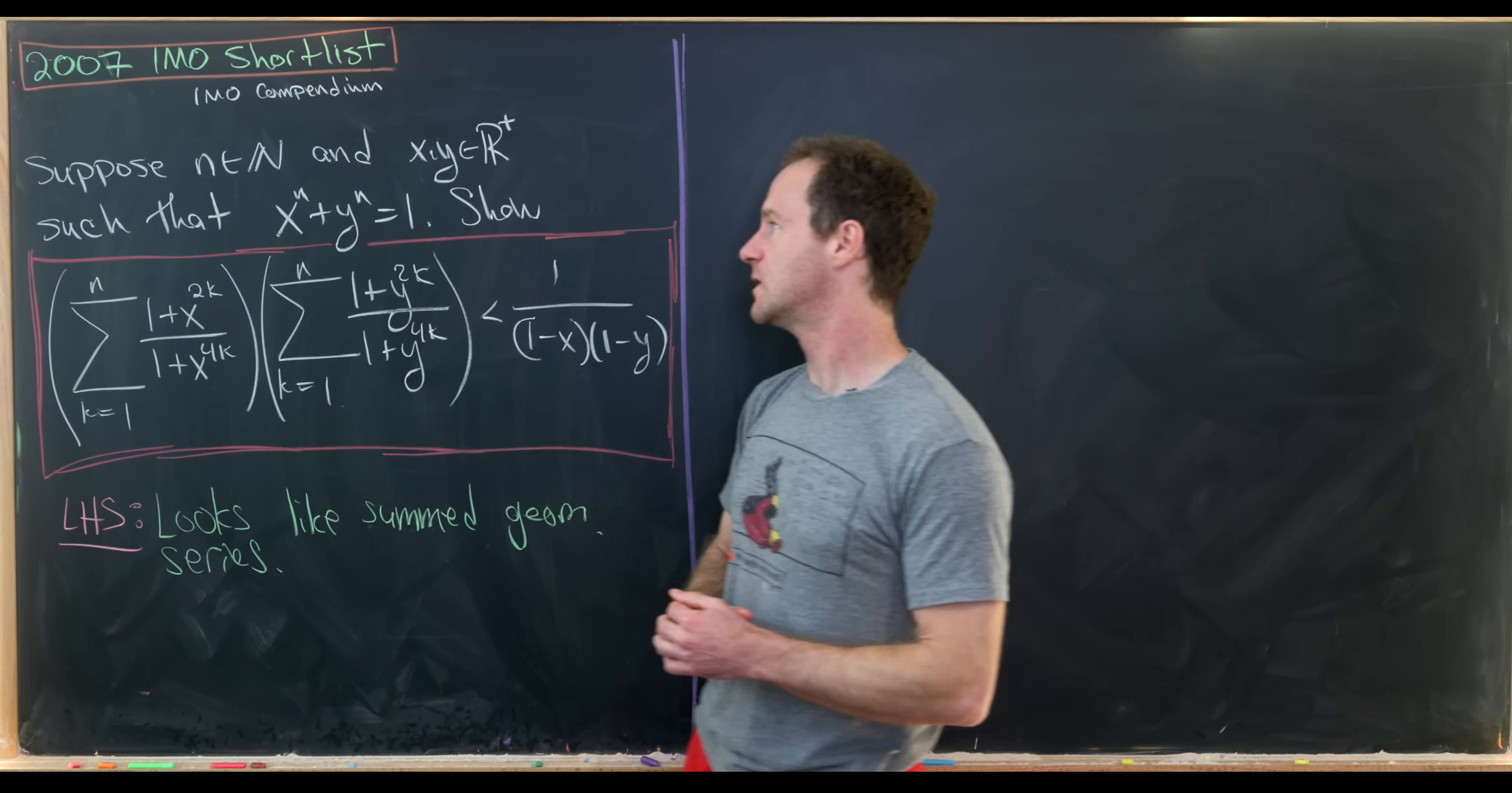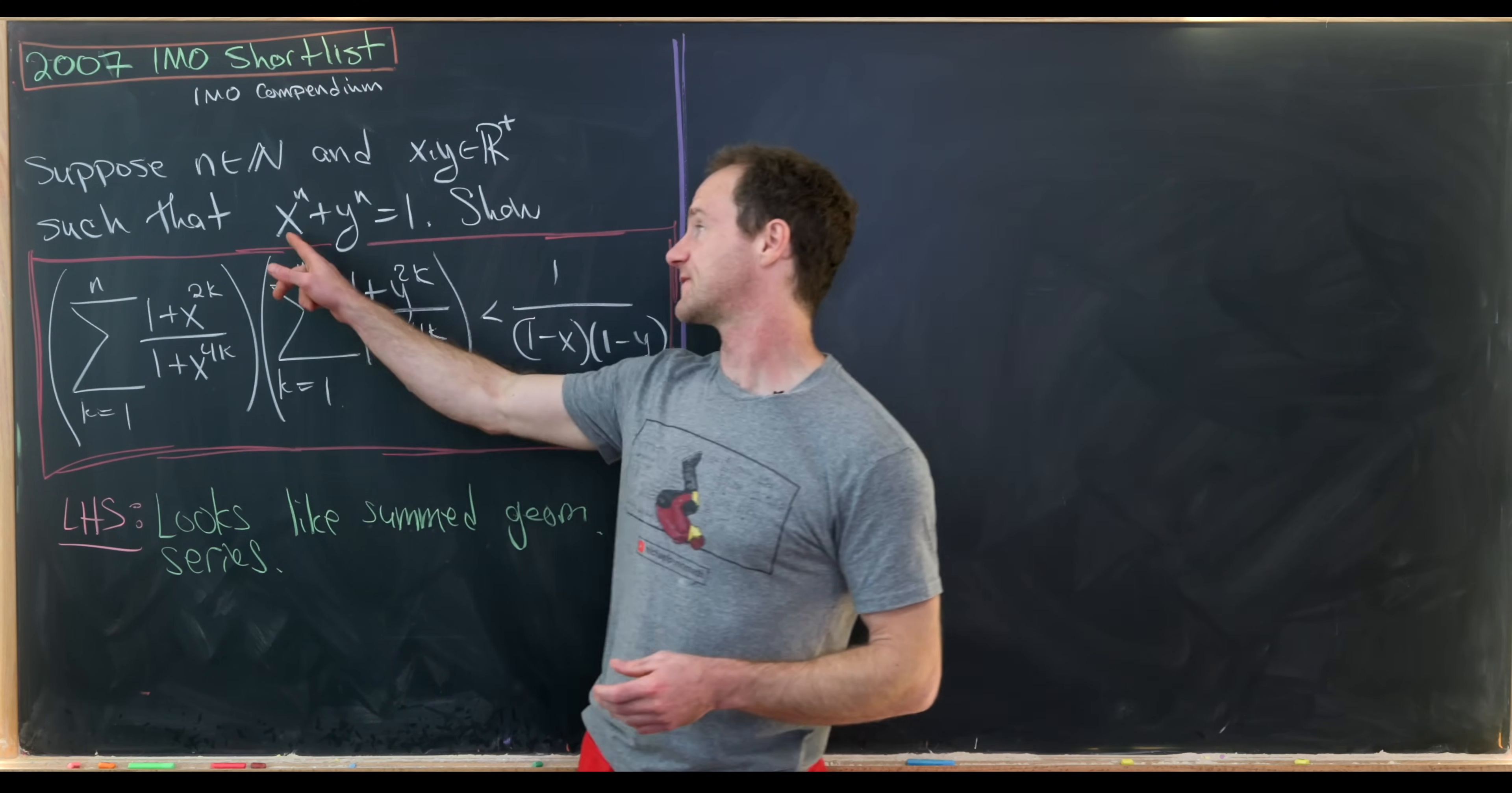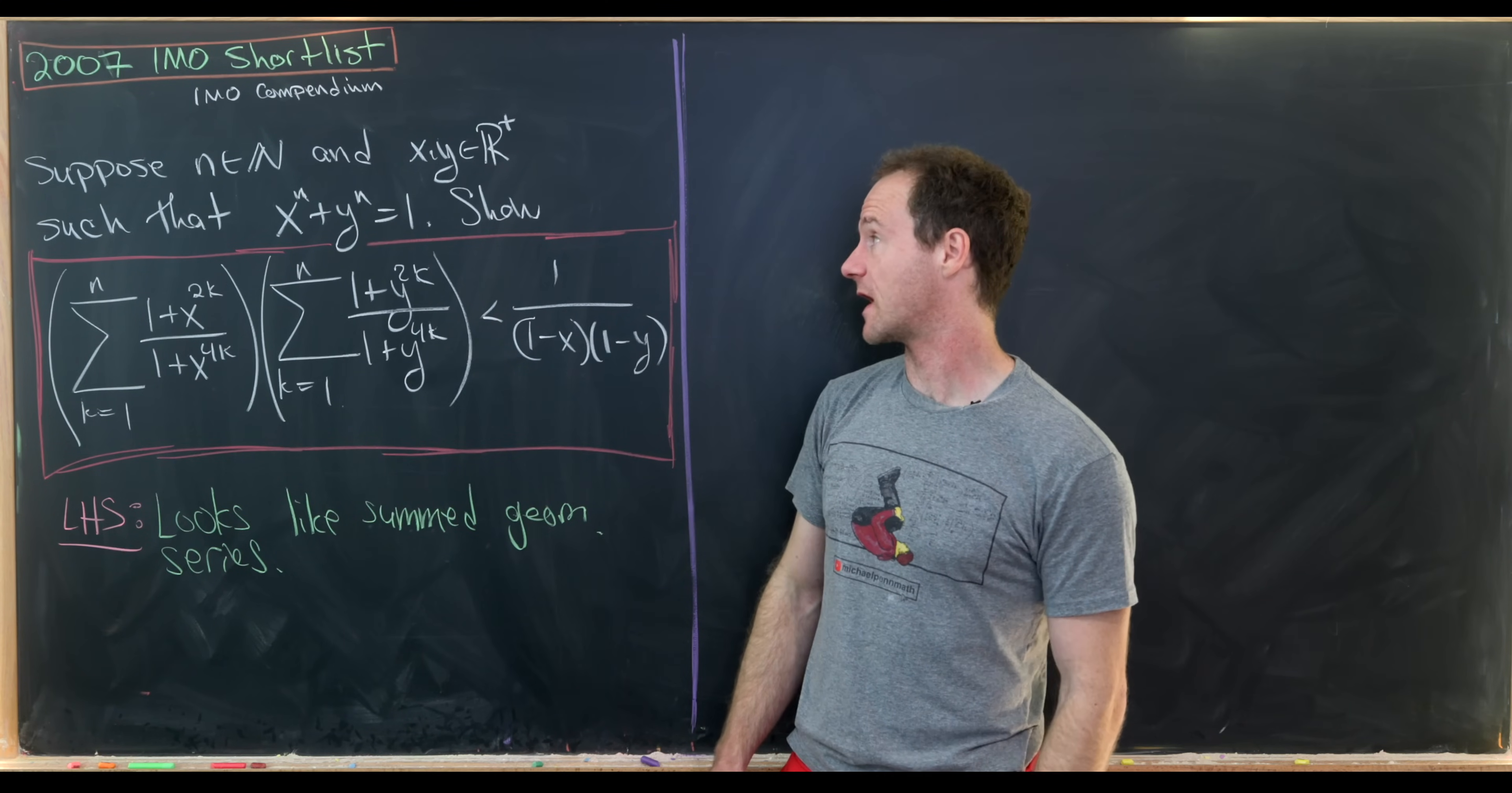Okay, so let's see what we have. We'd like to suppose that n is a positive integer, and x and y are positive real numbers, satisfying x to the n plus y to the n equals 1. So that means that x and y are on this generalization of a circle, if you want to think about it like that.